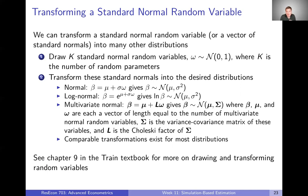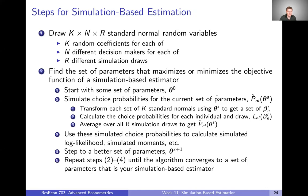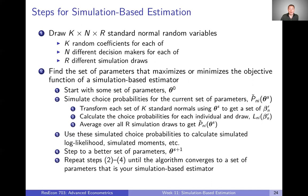Now all of these pieces come together in a recipe for implementing a simulation-based estimation procedure. The first thing we want to do is draw K times N times R standard normal random variables. With K random coefficients in our model, we draw those separately for each of our N decision-makers, using R simulation draws per decision-maker to simulate choice probabilities. We draw all of these at the outset.